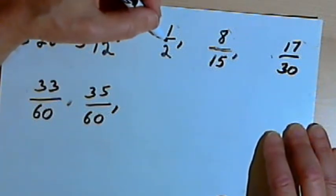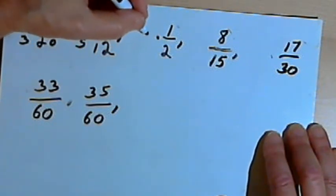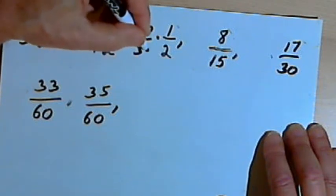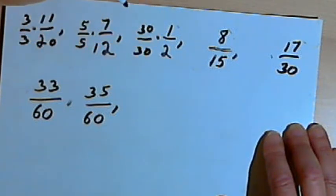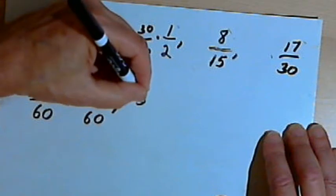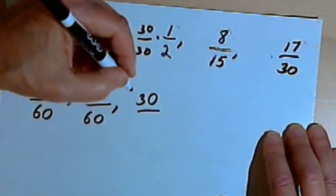I've got 1 over 2. I have to multiply that by 30 over 30 to change the denominator into 60. So that's going to be 30 over 60.